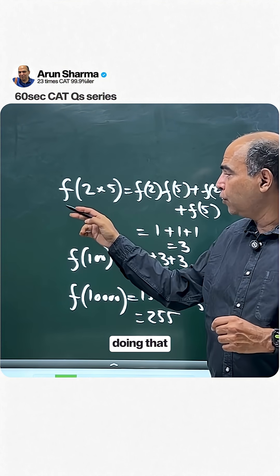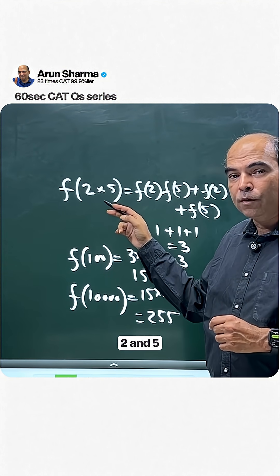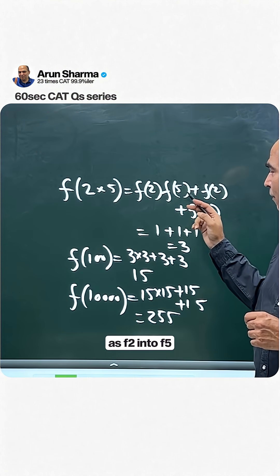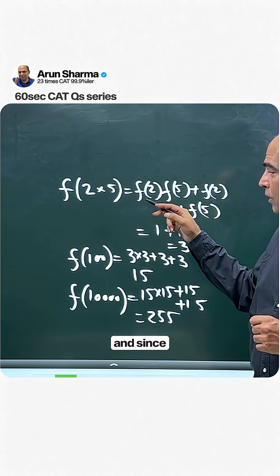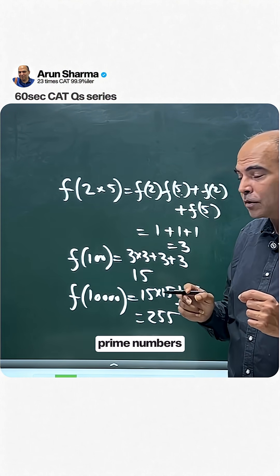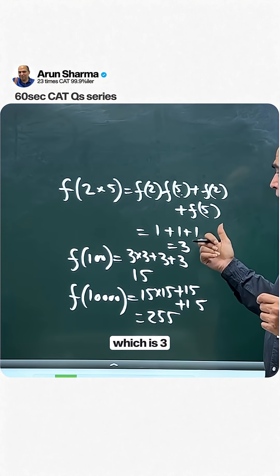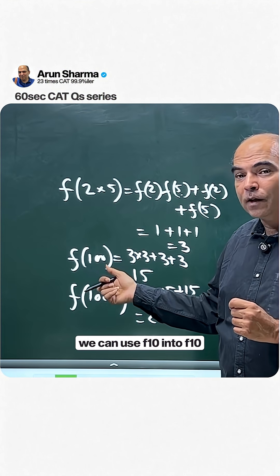Calculate f(10) using f(2,5): f(10) = f(2)f(5) + f(2) + f(5). Since 2 and 5 are both prime numbers, this equals 1 + 1 + 1 = 3. Now we can use f(10) to find f(100).